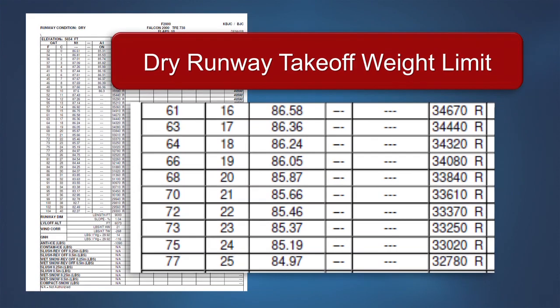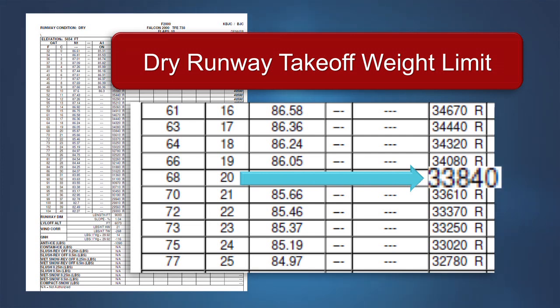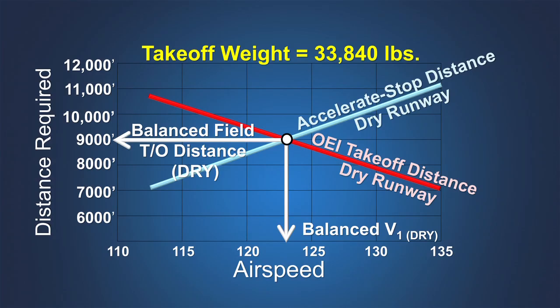On a dry runway for this same airplane type, the maximum takeoff weight is 33,840 pounds, or almost 2,200 pounds lighter than the apparent weight limit previously calculated on a wet runway. At 33,840 pounds, the balanced field takeoff distance is precisely 9,000 feet — the length of runway 29R.